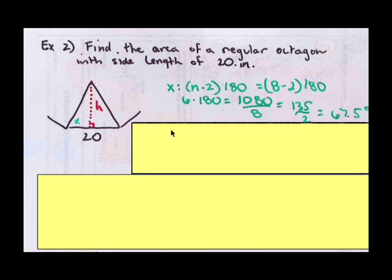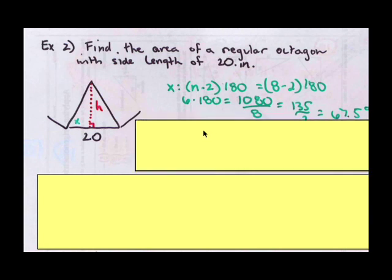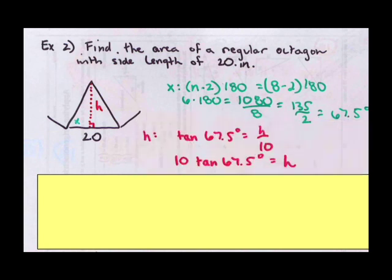Knowing that information, I can set up a trigonometric function problem. I want the opposite of angle x and I have the adjacent. In this right triangle, the adjacent side would be 10, half of 20. We have tangent of 67.5 equals the height over 10. Multiply both sides by 10 and we get 10 times the tangent of 67.5 equals the height.